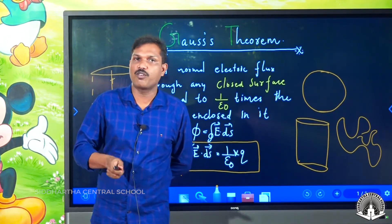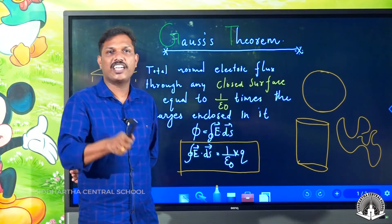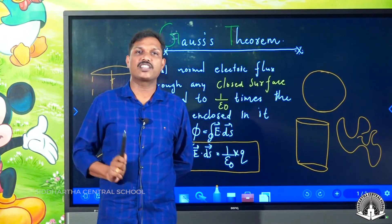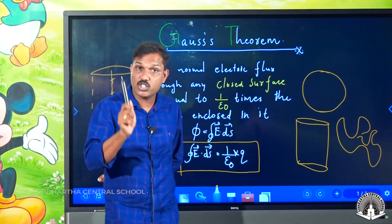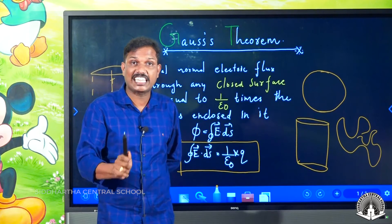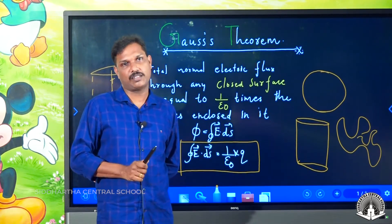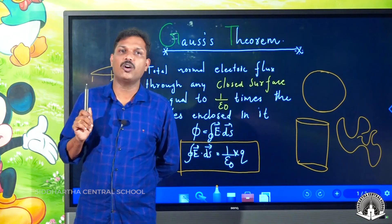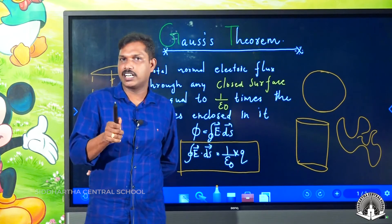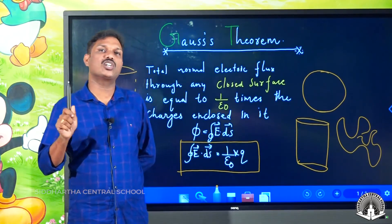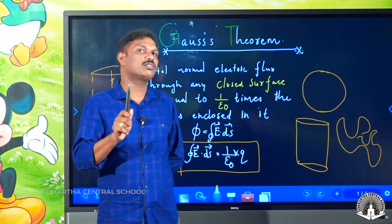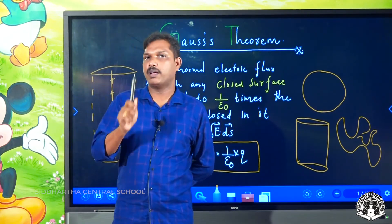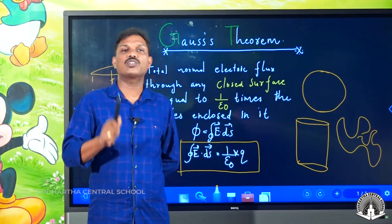What is the importance of Gauss theorem? We can find the electric flux of any closed surface. A Gaussian surface is an imaginary symmetrical surface which is closed in nature. In the proof: e dot ds equals 1 by epsilon 0 into q, where e denotes electric field intensity, ds denotes surface area, 1 by epsilon 0 denotes permittivity, and q denotes charge.